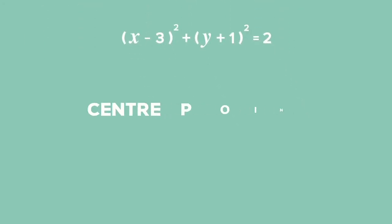So the centre point has the coordinates (3, -1). The radius is the square root of 2. Now that we know the centre's coordinates, we can sketch a diagram and see what to do next.